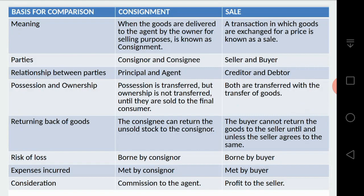In a sale, if any further loss occurs after the transaction, it is borne only by the buyer — the seller has nothing to do with it. Next comes expenses incurred. All the expenses required to send the consignment and complete the voyage from one place to another are met only by the consigner. In a sale, however, expenses incurred to move the goods from the point of sale to the buyer's destination are always borne by the buyer.